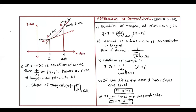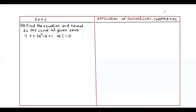This is your basic formula. You have to remember 4 formulas and 2 notes. Now I will start Exercise 4.1. Question number 1: Find the equation of the tangent and the normal to the curve at the given points.